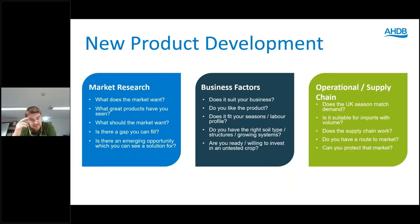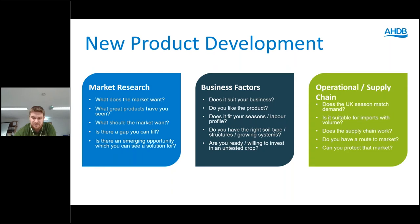In summary: market research covers market factors — it's very much product-driven. What have we seen? What does the market want or what should the market want? Business factors cover whether the product suits our business — do we have labour available, do we have glasshouses or tunnels at the right time of year, and do we have the knowledge to grow it? Then looking at supply chain and operational factors: we think about whether the UK season matches demand, whether it's a proven product, and what the international marketplace looks like.